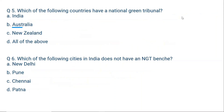Question 5: which of the following countries have a National Green Tribunal? Option A: India. B: Australia. C: New Zealand. D: All of the above. All these countries — Australia and New Zealand — both have a National Green Tribunal. India is the third country after them to have a National Green Tribunal. So the answer is D, all of the above.